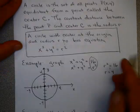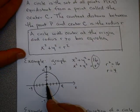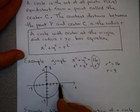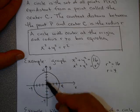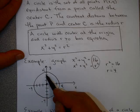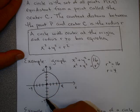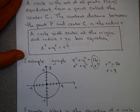Drawing this by hand, you would draw the origin here, which is the center, and then we have a radius of 4, so count out 4 on the x-axis in both directions, and 4 on the y-axis in both directions, and then draw the circle.